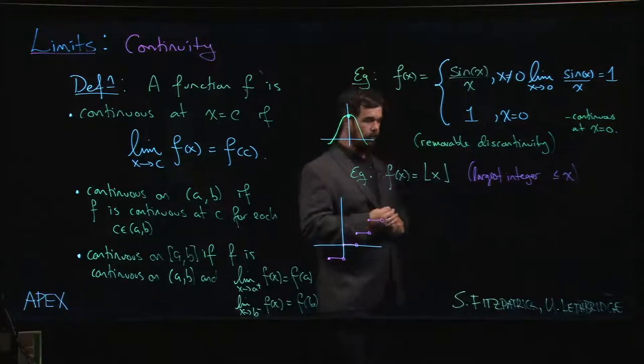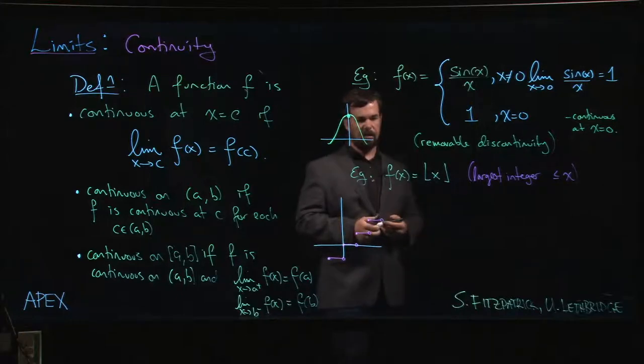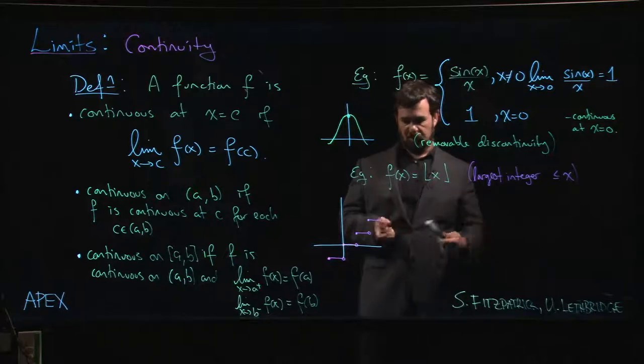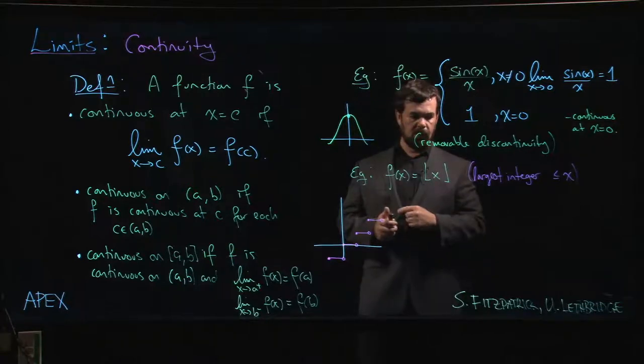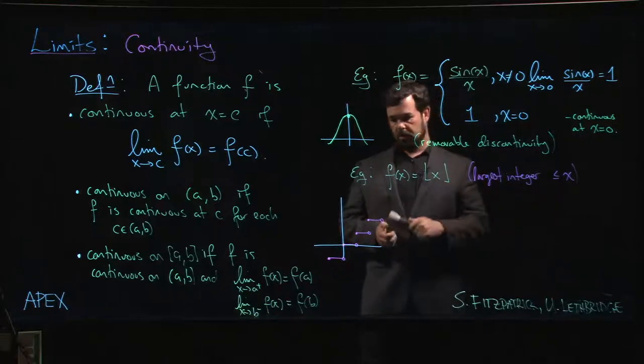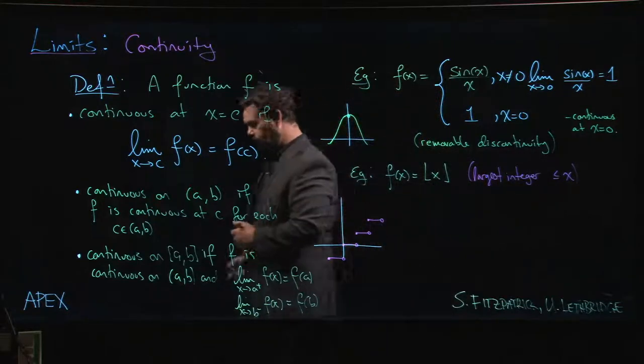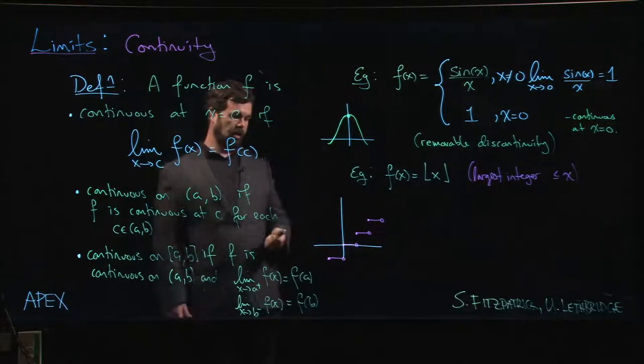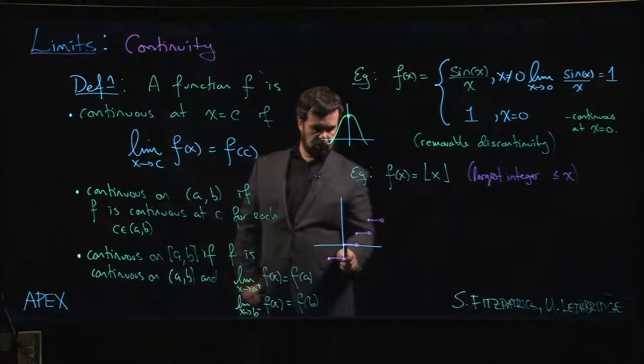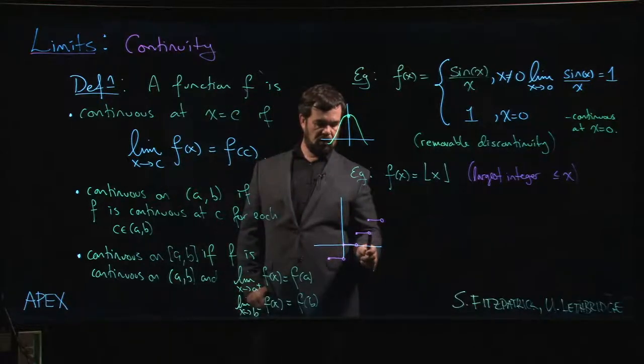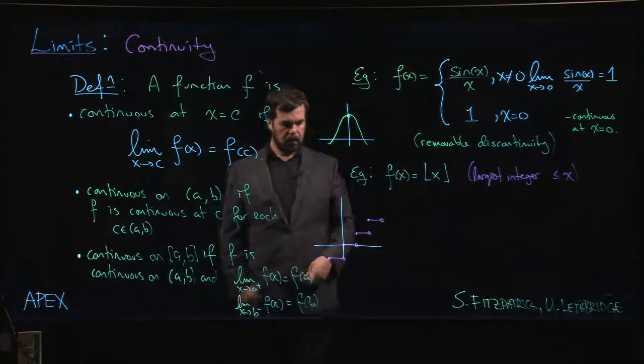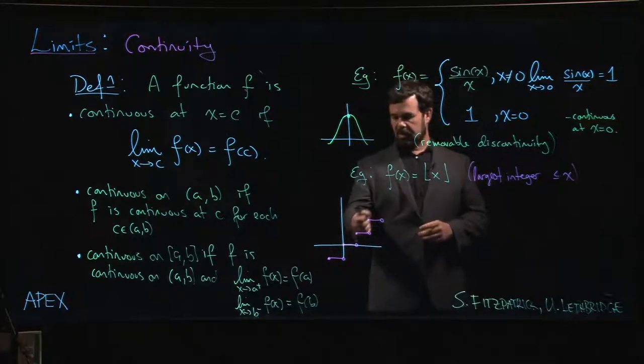Now this example here has a number of names - it's sometimes called a floor function, greatest integer function, or step function. This is the function that takes a real number as an input, returns an integer as an output, and the integer that it gives you is basically the biggest integer that's less than or equal to whatever number you put in. So for numbers between 0 and 1 it's going to give you 0, for numbers between 1 and 2 it gives you 1, for numbers between 2 and 3 it gives you 2, and so on.